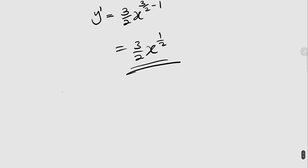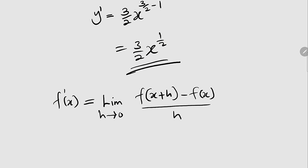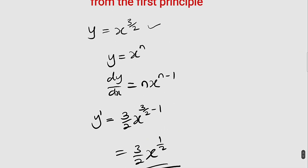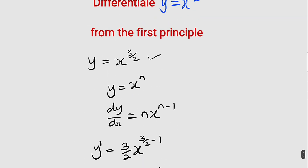From the first principle, it is stated that f prime of x, which is the same as dy over dx, is equal to the limit as h approaches 0 of f of x plus h minus f of x divided by h. Our function is x to the power of 3 over 2, but remember our function y equal to x to the power of 3 over 2 can be written as the square root of x to the power of 3, from the laws of indices. So we are going to make use of this.